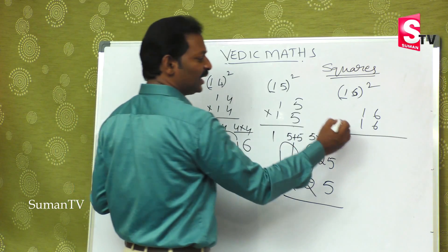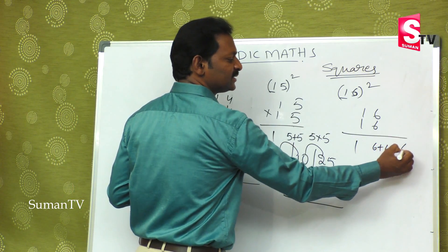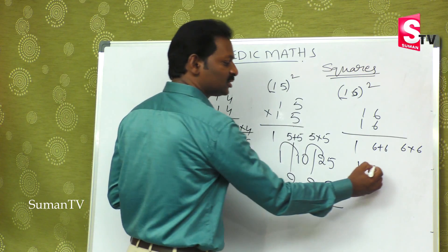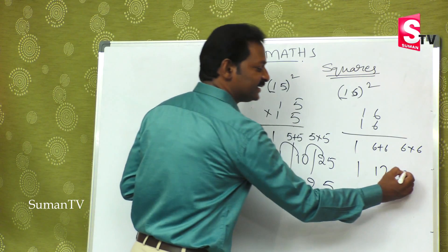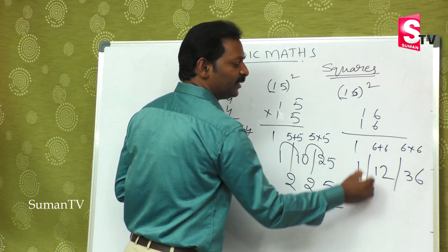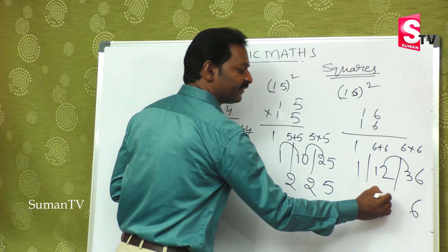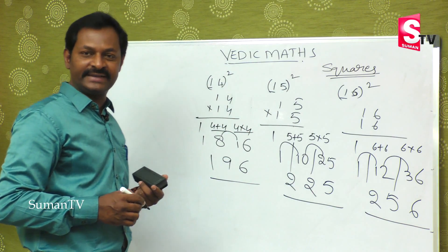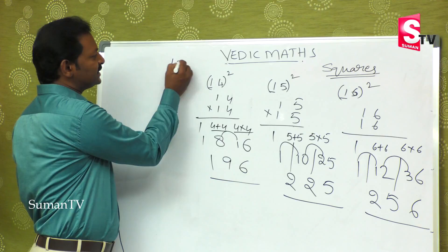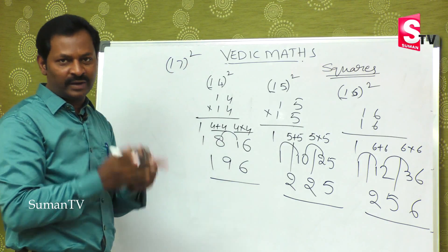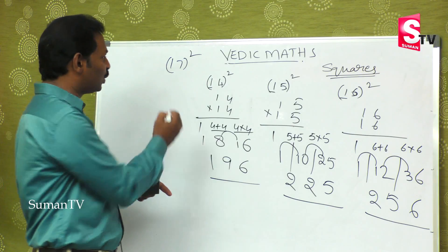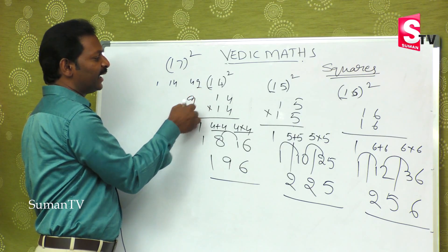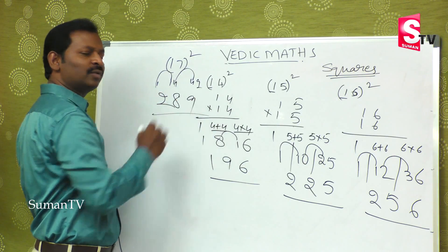For 16 square: 1, then 6 plus 6 is 12, then 6 into 6 is 36. After balancing, the answer is 256. For practice, 17 square: first 1, then 7 plus 7 is 14, then 7 into 7 is 49. After applying the balancing rule, the answer is 289.